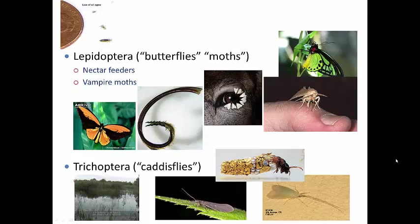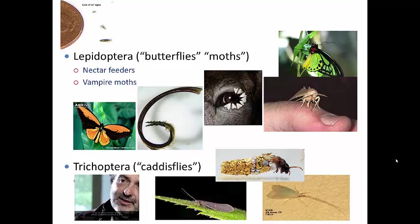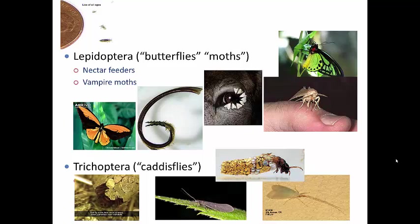The final order we are looking at is the Trichoptera, commonly known as caddisflies. Trichos means hair, while ptera means wings. The adults are covered with very long silky hairs and setae over most of the body and wings. These insects are very common, found worldwide, and the larvae are aquatic. In fact, these are the most diverse insect order whose members are exclusively aquatic.